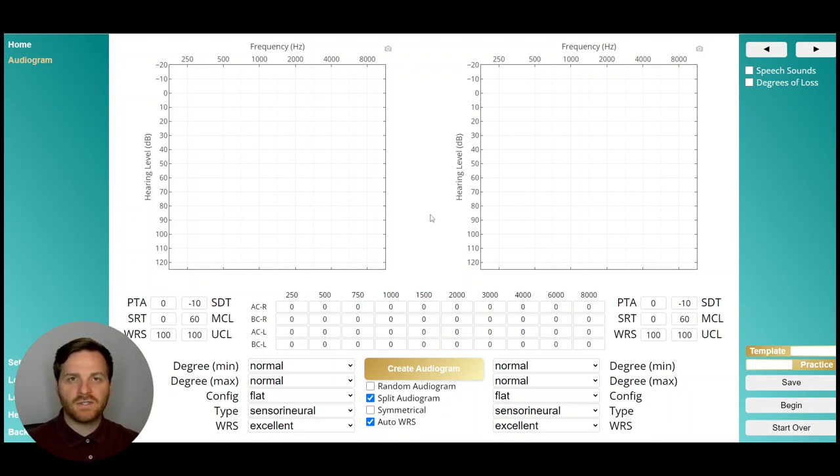But I'm going to go over some of the extra settings that are on this page and on the audiometer page. We know that you can use the degree min and degree max to choose the better and worse hearing thresholds for each ear, and you can change the configuration type and expected WRF score for each ear. Let's look at some of these buttons down here.